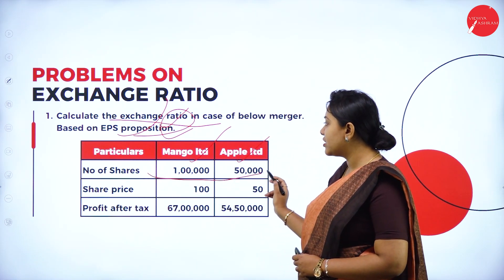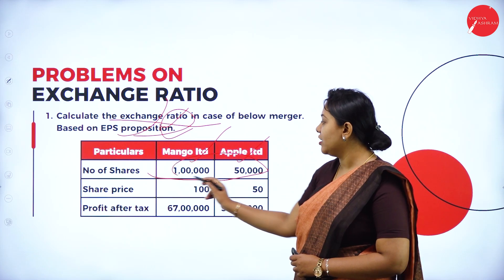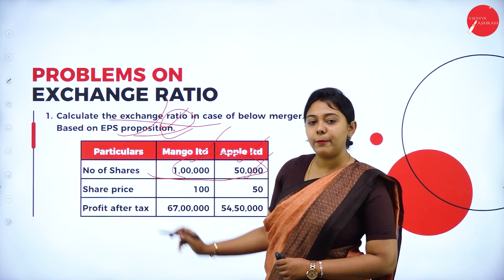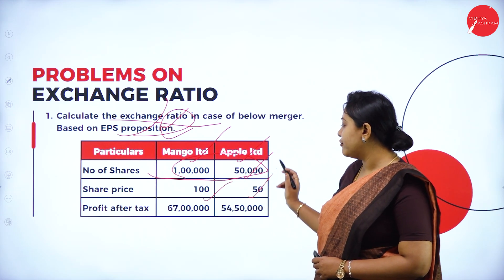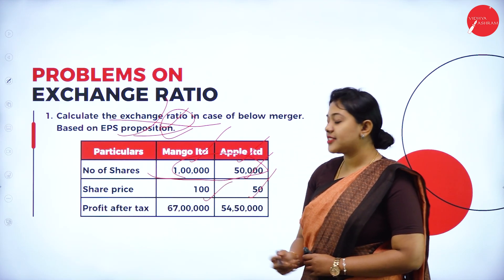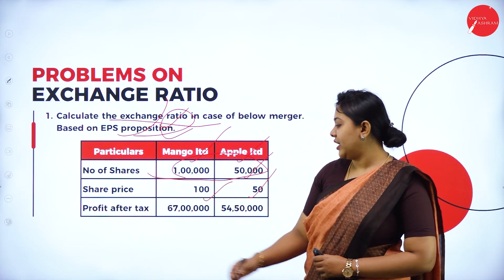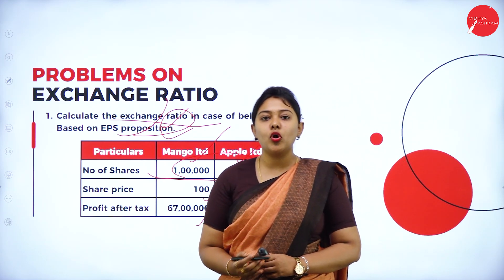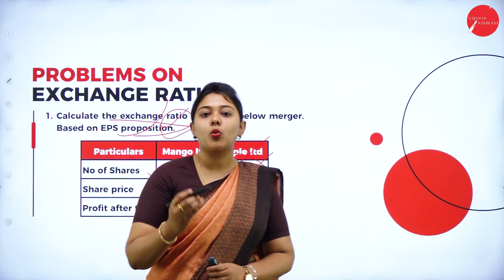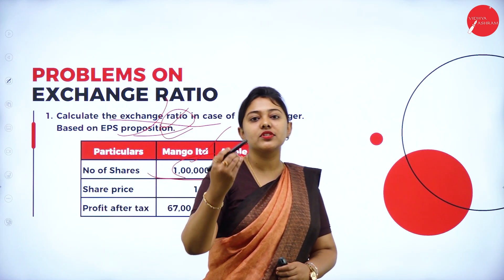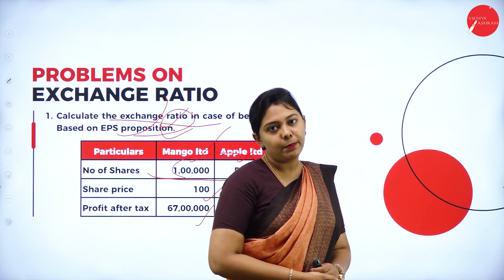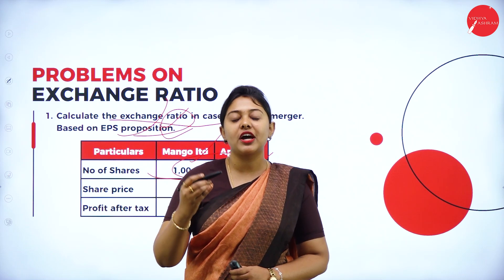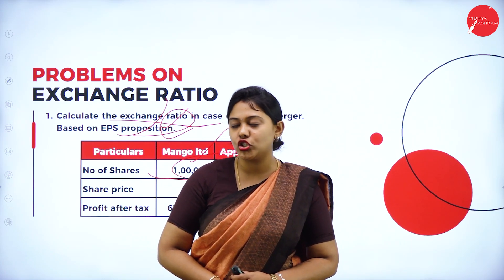The number of shares for Mango Limited is 1,000 shares and for Apple Limited is 50,000 shares. The share price is 150. Profit after tax is 67 lakh and 54 lakh respectively. For the EPS calculation, the formula — as discussed in the last class — is profit after tax divided by number of shares.